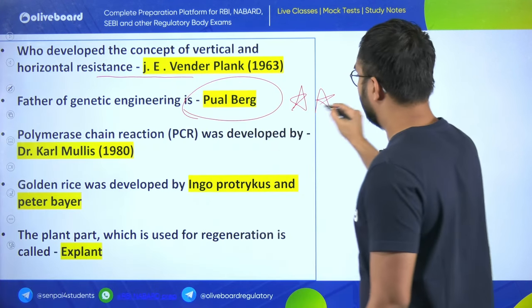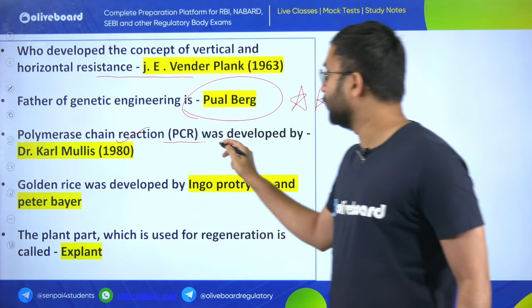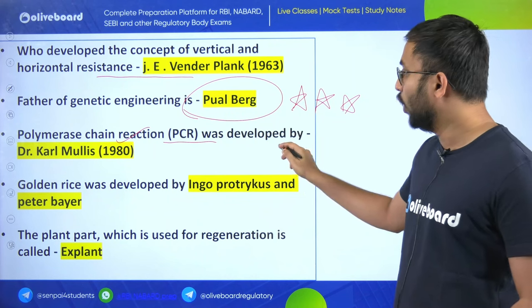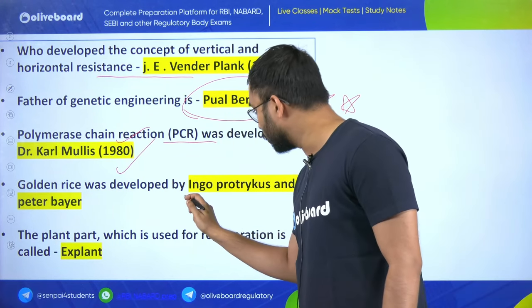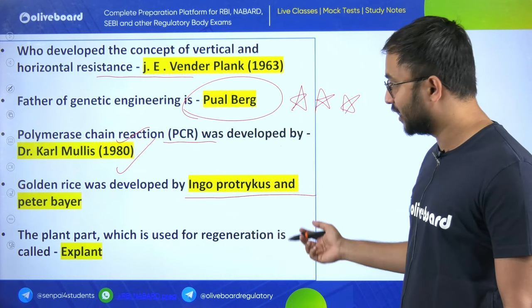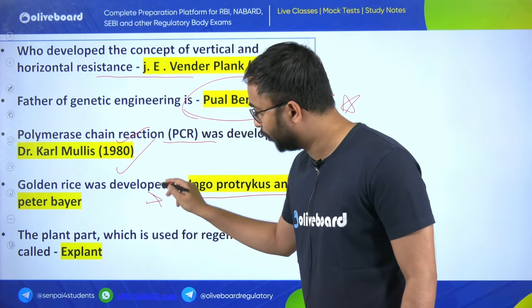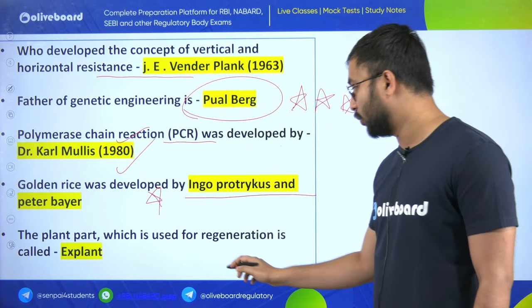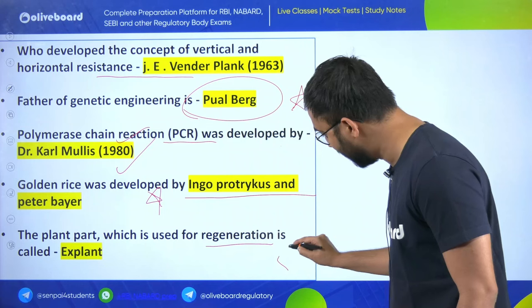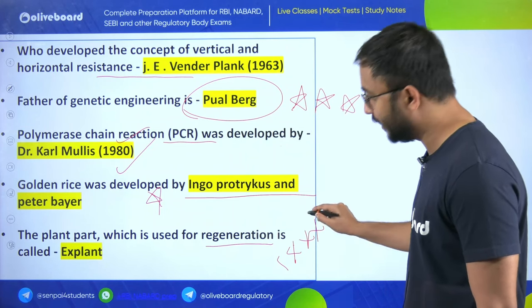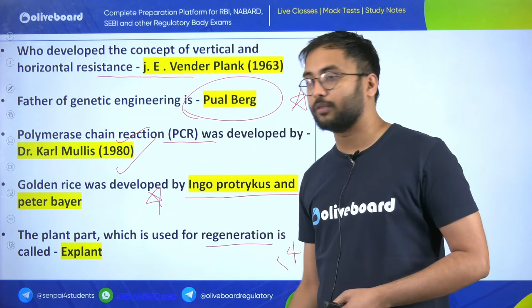Vanderplank is the father of genetic engineering - very important. Paul Berg, just know about it. Polymerase chain reaction (PCR) was developed by Kary Mullis in 1980. Golden rice was developed by Ingo Potrykus and Peter Beyer - very important. The plant part used for regeneration is called an explant.